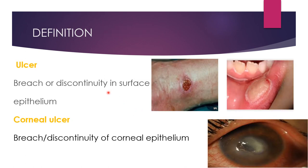What is the definition of ulcer? An ulcer is defined as a breach or discontinuity or disruption of the surface epithelium. It could be in any structure — like skin ulcers, mouth ulcers, gastric ulcers, or urinal ulcers. The same applies to the cornea. A breach or discontinuity or disruption in the corneal epithelial surface is called a corneal ulcer.